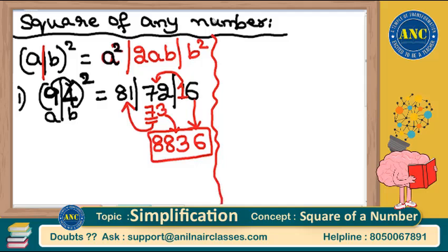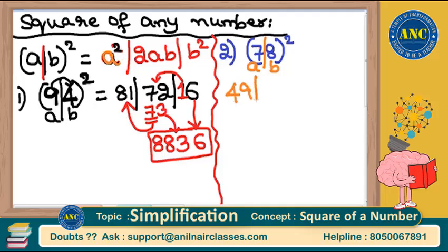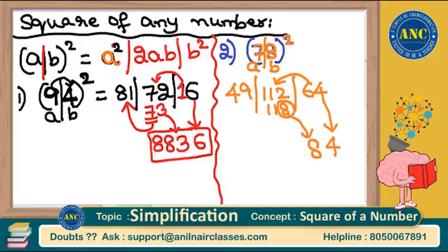Take another 2-digit number — 78². Split as a = 7, b = 8. Substitute: a² = 7² = 49. 2ab = 2 × 7 × 8 = 112. b² = 8² = 64. Take unit digit 4, carry 6. 112 + 6 = 118. Take unit digit 8, carry 11. 49 + 11 = 60. Answer for 78² is 6084.